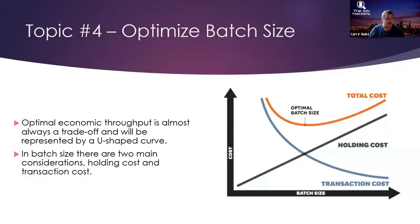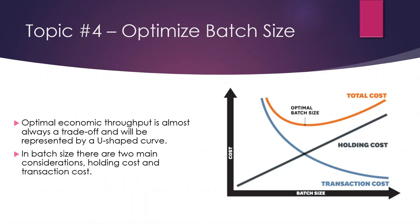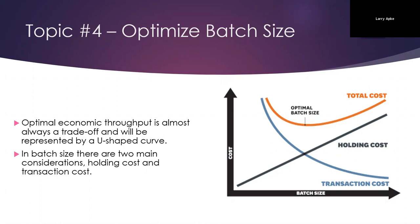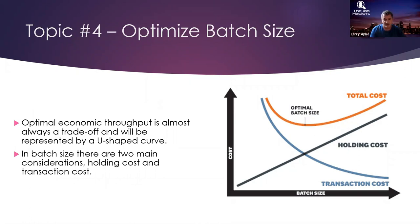We want smaller batch sizes, but usually not one-piece flow — going back to the middle path, how do we calculate what optimal batch size is? Mathematically, there are two things to consider: transaction cost and holding cost. Reinertsen illustrates this with an egg story: if I want to eat two eggs every morning, I can buy two eggs at a time — that's a low holding cost situation — or I can go to Costco and buy 730 eggs at once.